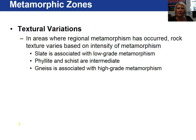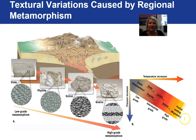The textural variations within metamorphic zones start with slate, which is a low-grade metamorphic rock. At higher grades we get phyllite and schist, and at the highest grade, gneiss. As we go from low to high-grade metamorphism, grain size enlarges and minerals change from low-temperature to higher-temperature minerals. Starting with the sedimentary rock shale, low-grade metamorphism produces slate, then phyllite, schist, gneiss, and at high enough grade it may start to melt, producing a migmatite.